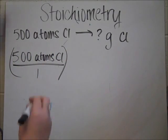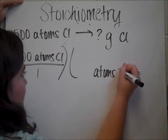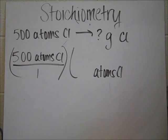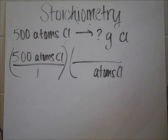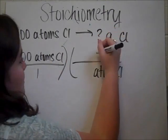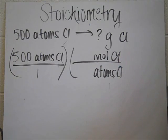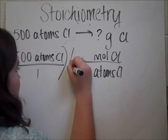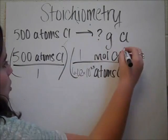And then in order to cancel out atoms, we have to put atoms on the bottom again. But we have to find a pit stop so we can get from atoms to something else, which will go to grams. And a good pit stop that we always use is moles. You can use moles to convert almost anything to something else, and so it's going to be the major pit stop that you use in multi-step equations. And so in order to get 1 mole of chlorine, we have, again, Avogadro's number: 6.02 times 10 to the 23rd. And that will equal 1 mole of chlorine.